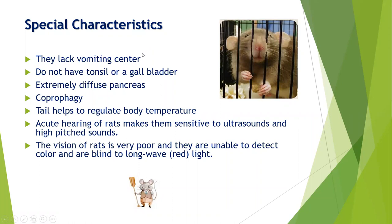Some special characteristics of rats: they lack a vomiting center, so antiemetic drugs cannot be tested and they will not produce vomiting. They do not have tonsils or a gallbladder. They have an extremely diffuse pancreas, making pancreatectomy quite difficult. They practice coprophagy, meaning they eat their own stool. Their tail plays an important role in regulating body temperature. They have acute hearing, making them sensitive to ultrasounds and high-pitched sounds. Their vision is very poor; they are unable to detect color and are blind to long-wave red light.